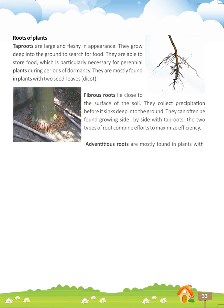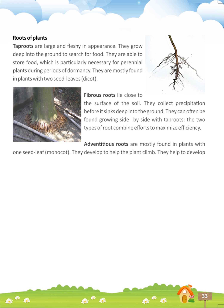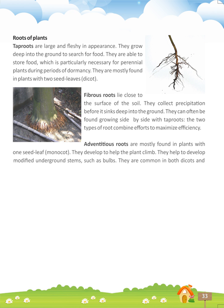Adventitious roots are mostly found in plants with one seed leaf — monocots. They develop to help the plant climb. They help to develop modified underground stems, such as bulbs. They are common in both dicots and monocots.